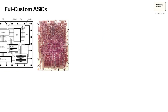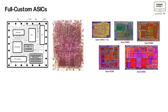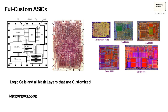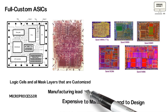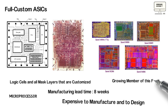A full custom ASIC is one which includes some logic cells that are customized and all mask layers that are customized. A microprocessor is an example of a full custom integrated circuit. Designers spend many hours squeezing the most out of every last square micron of microprocessor chip space by hand, customizing all of the integrated circuit features.